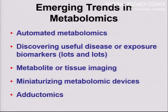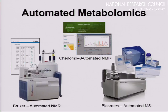Closing with some emerging technology trends: there are now trends in automated metabolomics — if it takes days to measure thousands of samples manually, can we automate that? Companies and labs are developing this now; it's already here or around the corner. This is an important step and advancement in the field. There are also increasing efforts to look at disease and exposure biomarkers, exciting developments in tissue imaging or chemical imaging based on mass spectrometry, significant efforts to miniaturize metabolomic devices, and adductomics, something that Steve Rappaport has been pioneering.